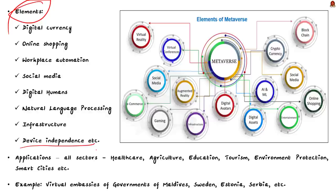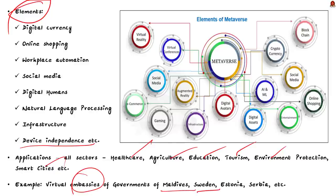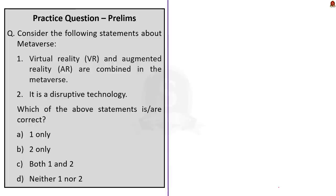Metaverse provides a wide range of applications — individuals can interact with each other, work, transact business, learn and play games. It has applications in healthcare, agriculture, education, tourism, environment protection, and smart cities. For example, many countries have established virtual embassies — including the governments of Maldives, Sweden, Estonia and Serbia. There was even a couple who hosted a wedding reception in the Metaverse. In this discussion, we saw in detail about Metaverse and its applications.